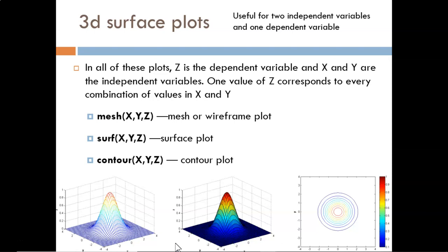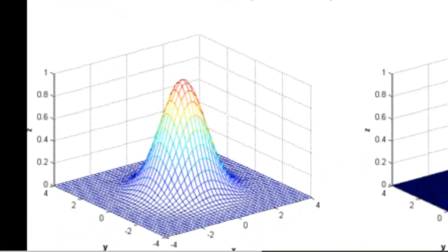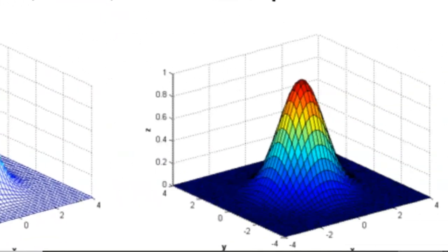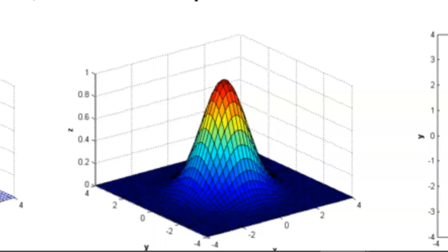A mesh plot, shown on the left, creates a wireframe plot. A surface plot, shown in the center, looks just like a mesh plot but with the grid squares colored in.